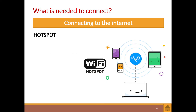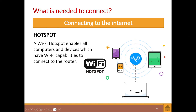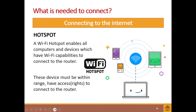We also have hotspots. A Wi-Fi hotspot enables all computers and devices with Wi-Fi capability to connect to the router. These devices need to have wireless capability and must be within range of the hotspot. They also need access rights to connect to the router — think of when you go to KFC or McDonald's, you log in, it gives you access, and they tell you how much data you can use.